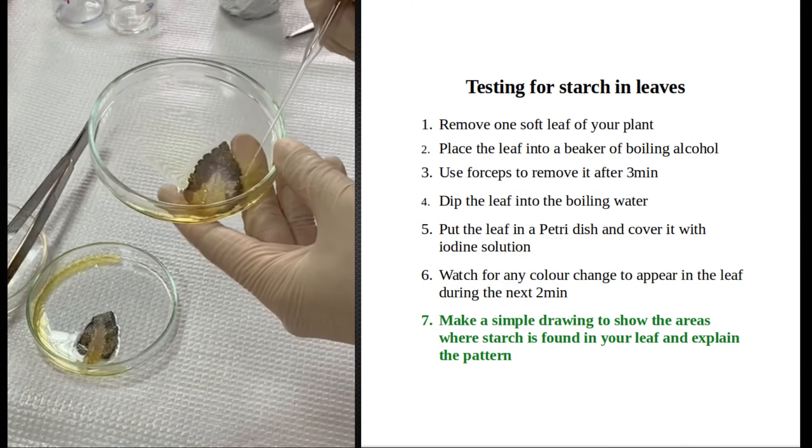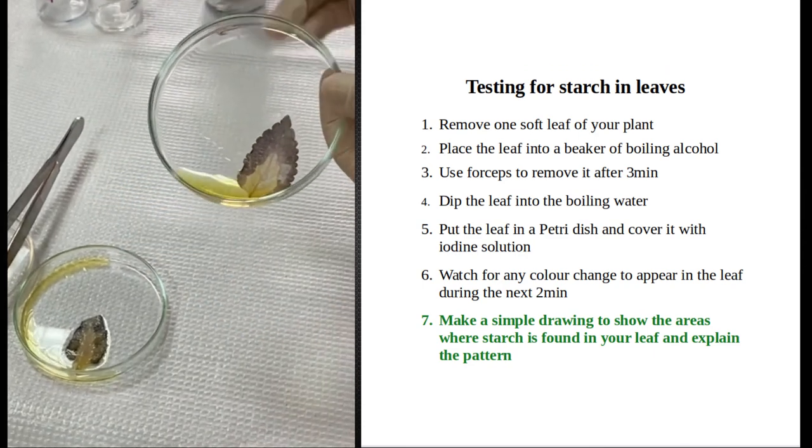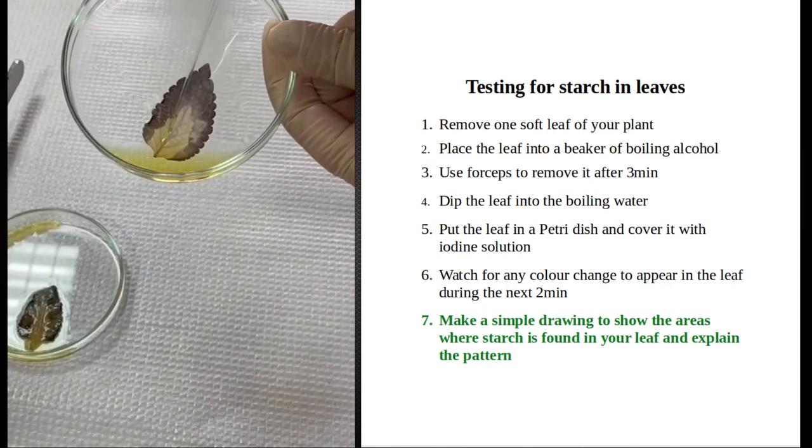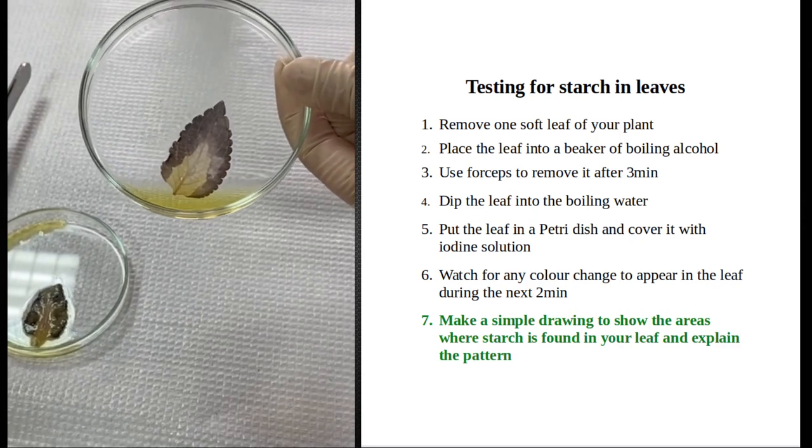Green areas are now dark blue in color, indicating the presence of starch, while the middle where we lack chlorophyll, photosynthesis did not take place.